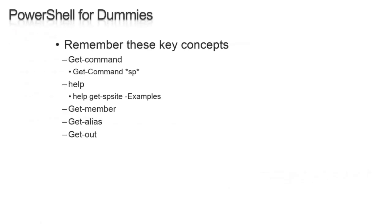Just a couple of key concepts. This is kind of the PowerShell for dummies slide — the 'I don't know where to start, I've forgotten everything' slide. Get-Command addresses the biggest challenge of any command-line environment: just discovering things, where stuff is. I've got a five-year-old daughter — if I set her in front of Central Admin and let her click long enough, she could figure out how to create a new site collection. Put her in front of PowerShell, though, and that's about it. So Get-Command is how you discover the cmdlet you're looking for.